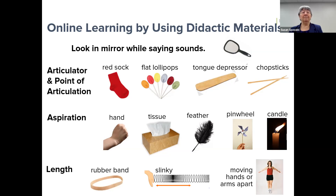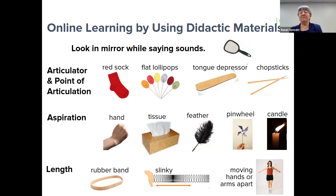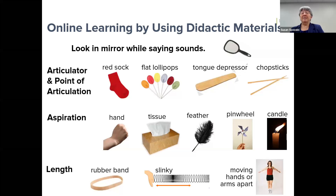If you're looking at points of articulation, ask students to bring flat lollipops. They can put the lollipop in their mouth and touch certain parts — the tongue, cheeks, or lips — and by touching different parts of the tongue they should be able to taste where it is: 'Oh, so that's what my tongue is doing.' They can also use a tongue depressor, or the blunt end of chopsticks from Asian restaurants, to reach in and touch the alveolar ridge, the velum, and other parts — carefully.